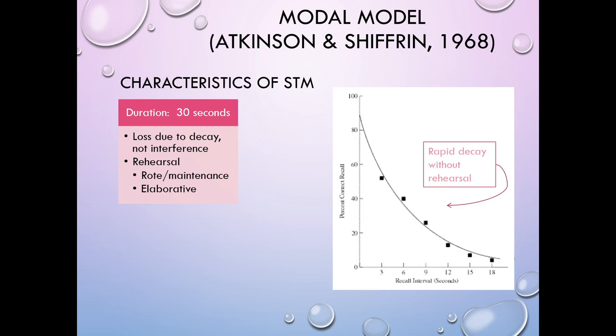If we don't rehearse, information rapidly decays out of short-term memory. A decay curve illustrates this: three seconds after you stop thinking about information, you're already down to about 50% recall. By 18 seconds, you're down to about 2% of the items. So performance rapidly declines once you stop any kind of rehearsal to keep material active in your short-term memory store.